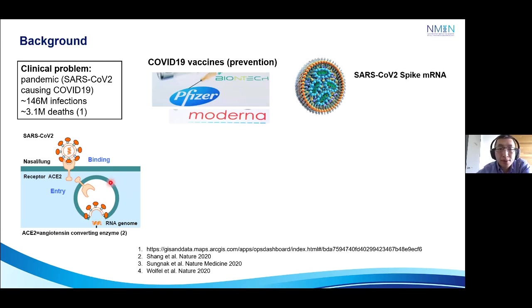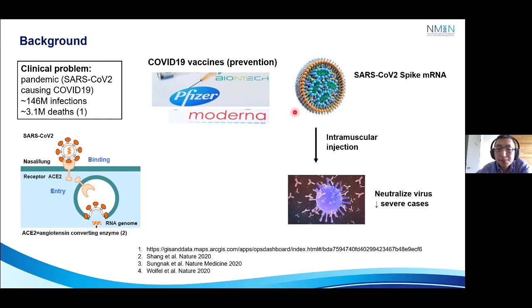However, there have been companies creating COVID-19 vaccines that have already been rolled out and are very successful. For example, Pfizer and Moderna have used nanoparticle technologies where they encapsulated the SARS-CoV-2 spike mRNA. When injected through intramuscular injections, our body produces antibodies against this by neutralizing the virus and thereby reducing severe cases.